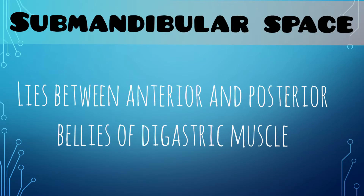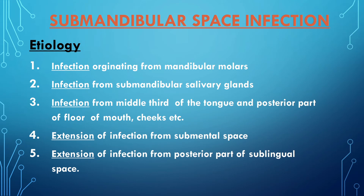Next we can go to the submandibular space, which lies between the anterior and the posterior bellies of the digastric muscle. The etiology of the submandibular space infection includes infections originating from the mandibular molars, infection from the submandibular salivary glands, infection from the middle third of the tongue and posterior part of the floor of the mouth, extension of infection from the submental space, and extension from the posterior part of the sublingual space.